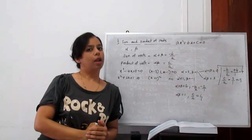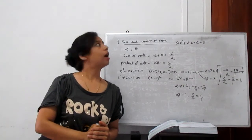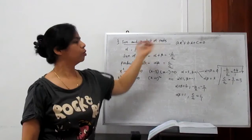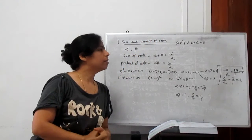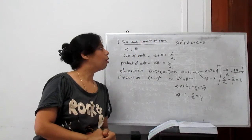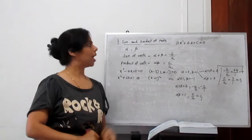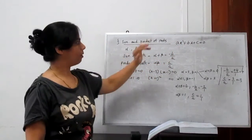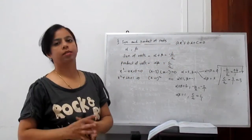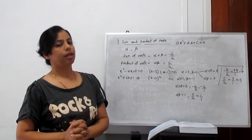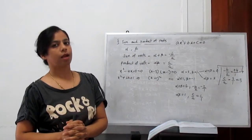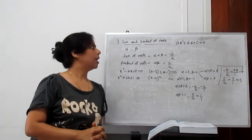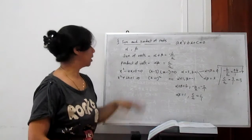Welcome to my new video. Now we learn about some important properties of roots of the quadratic equation in the form ax² + bx + c = 0. If you have this quadratic equation, then with some properties of the roots we can find many interesting things.